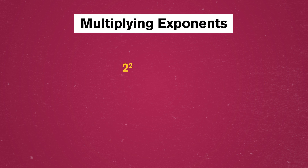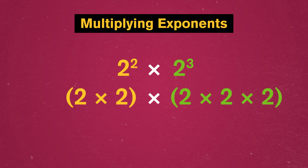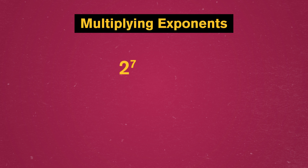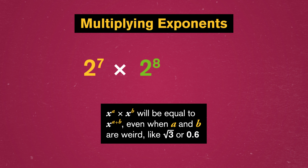Questions about powers that are negative, fractions, or even zero might seem mysterious, but the answers come from multiplication to division. So let's go back to the powers of two and figure out some patterns. If we multiply two to the two by two to the three, that's two times two times two times two times two times two — we would get five twos. Because an exponent tells us how many times to multiply a number by itself. Two to the two times two to the three is two to the five. So two to the seven times two to the eight becomes two to the fifteen. A hopeful mathematician would generalize and try to write a rule: x to the a times x to the b will be equal to x to the a plus b, even when a and b are weird, like square root of three or zero point six.